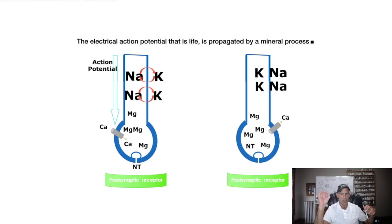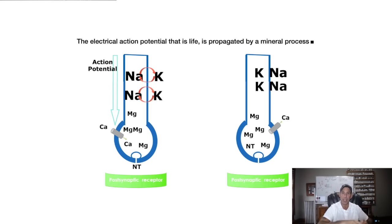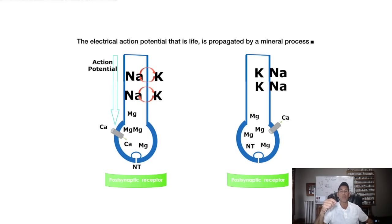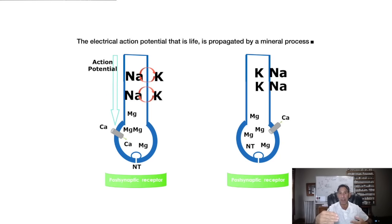A potassium deficiency can have huge implications regarding our health, so we must address the underlying causes. If you have a potassium deficiency in a skeletal muscle, that may be your twitches, cramps, spasms, or contractures. If that deficiency happens to be in a heart cell, it will lead to arrhythmias and eventually to more pernicious cardiovascular diseases, potentially ending in a fatal heart attack.